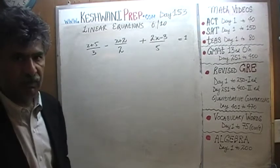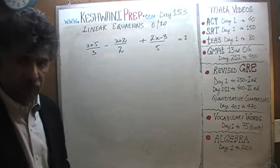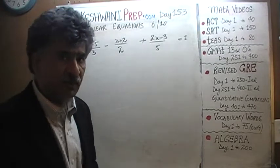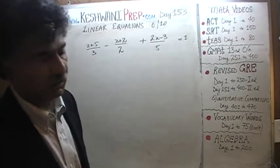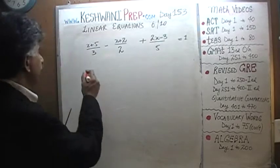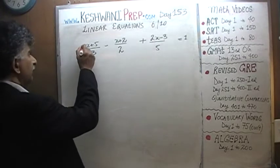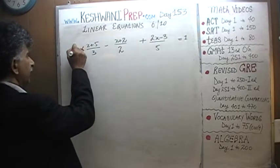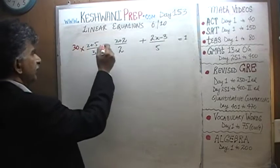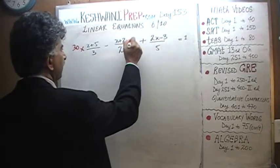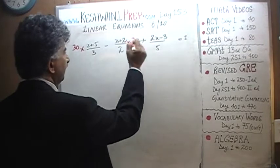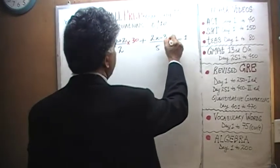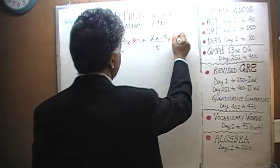6 times 5 is 30. So we are going to multiply this entire equation by 30 — every single term by 30. Multiply the first term by 30, multiply this term by 30, multiply that term by 30.